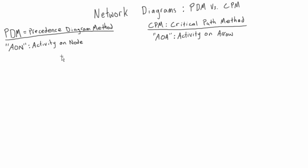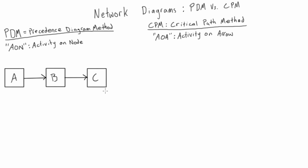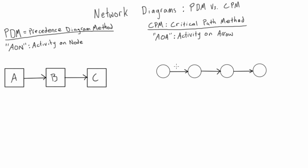When we draw a PDM network diagram, our activities are on the nodes, and the nodes are connected by arrows. The arrows have no duration — they're sort of like a point in time, just connecting activities with logic. With CPM, this is activity on arrow, so instead of the activity being on the node, it's almost an inverse — we have the activities on the arrows and the nodes represent points in time. So it looks like activity A leading into activity B, which leads into activity C.